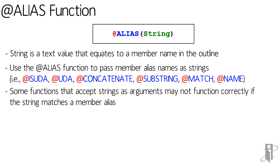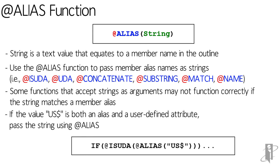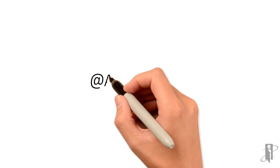Essbase may interpret the member alias as the member instead of a text input. So for example, if the value US$ is both an alias and a user-defined attribute, we need to pass the string using the alias command. To do that, we can use: if isUDA(alias("US$")). That way our US$ alias gets passed as a text input to the isUDA function.